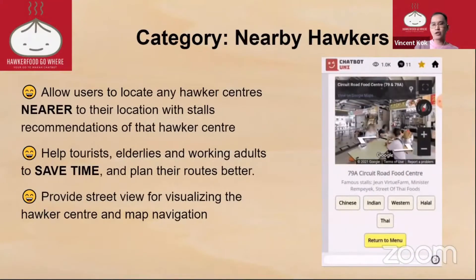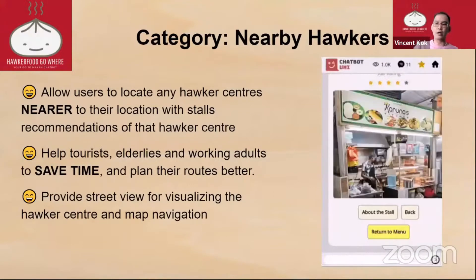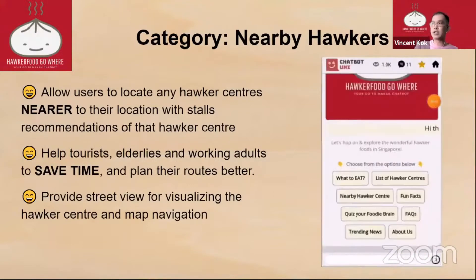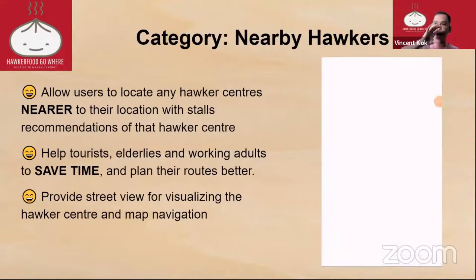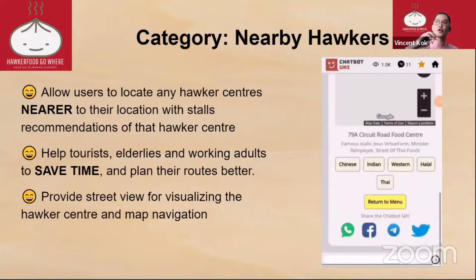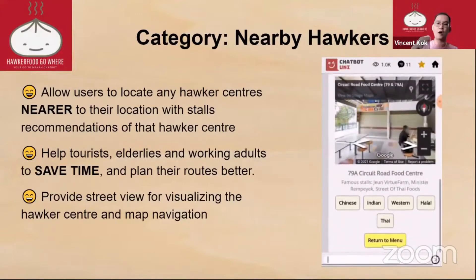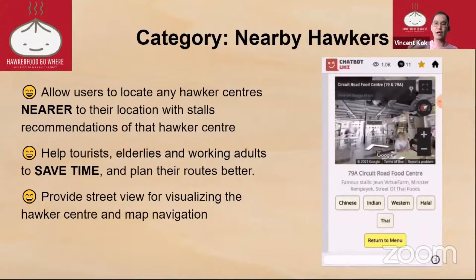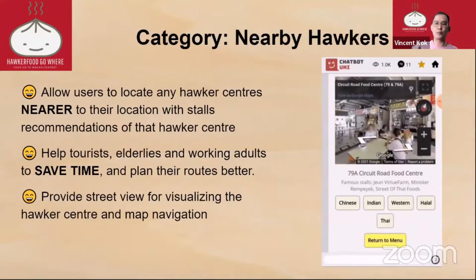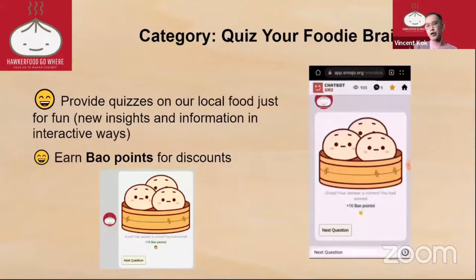For the nearby hawker feature, when you click on Nearby Hawker it will show you the hawker center, the stores at the hawker center, and a street view — I found you can incorporate street view to show the location.